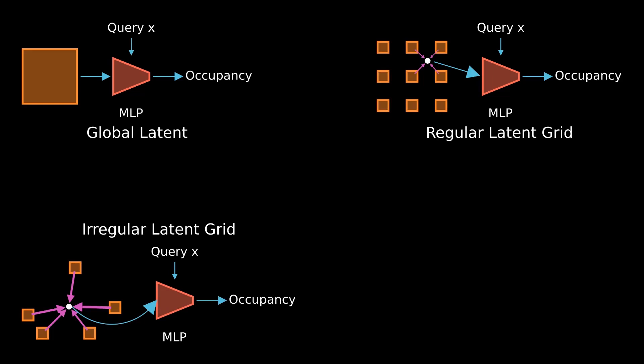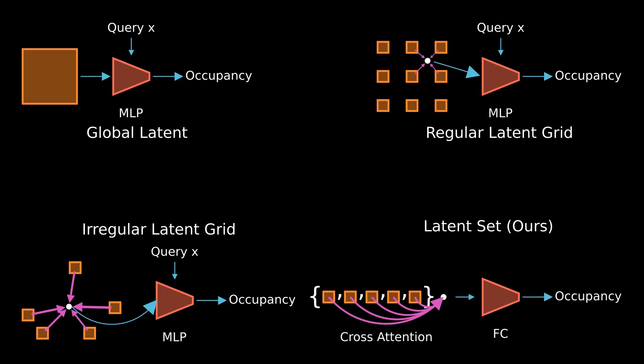Our shape representation is a set of latent vectors. All spatial information is encoded by a neural network and not explicitly designed by a human. This yields significant improvements in reconstruction performance and representation size.